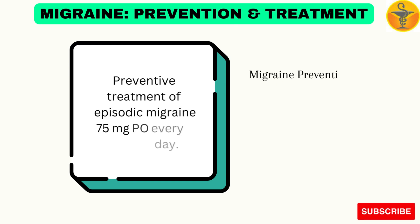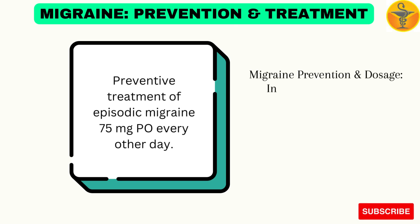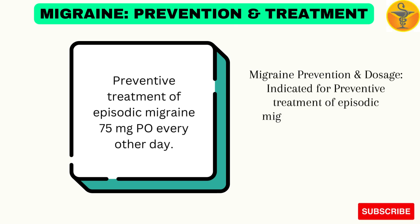Migraine Prevention and Dosage: Indicated for preventive treatment of episodic migraine. 75 mg per oral every other day.